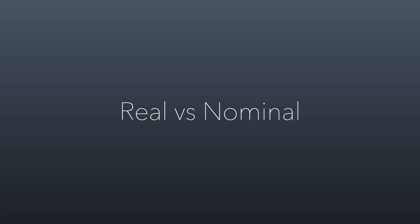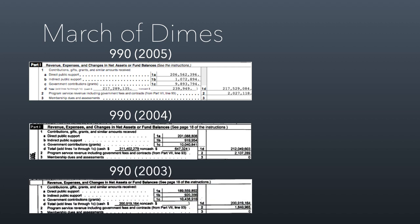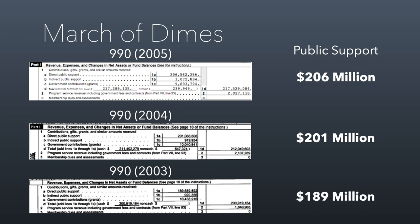So let's talk first about real versus nominal dollars. To illustrate this, I'm going to pull some numbers from the March of Dimes, a pretty big nonprofit. They work on scientific research and health practices to prevent birth defects. I'm going to pull the financial information from three years worth of 990s. These go from 2003 to 2005. The majority of March of Dimes revenue comes from public support or donations, and those are the numbers for each of those years. You can see from 2003 to 2005 there's pretty steady growth in their public support.